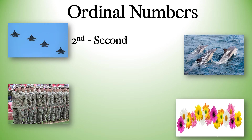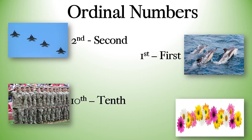Here we are going to look at four pictures, and I am going to ask you where something is in the group. Don't forget — we count from left to right. Picture number one: where is the second jet? A jet is a fast plane. Picture number two: where is the first dolphin? These are dusky dolphins and they live around New Zealand. Picture number three: soldiers — where is the tenth soldier in the line? And lastly, flowers — these are daisies. Where is the fifteenth flower in the line?